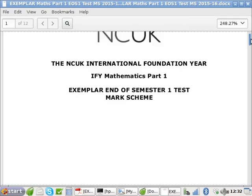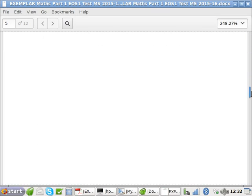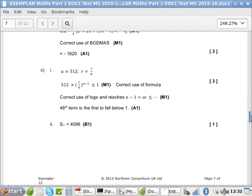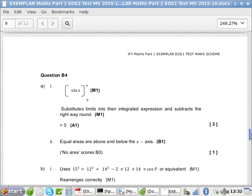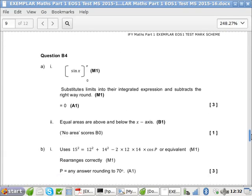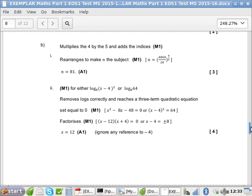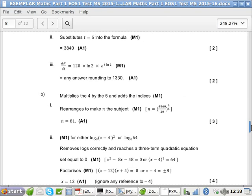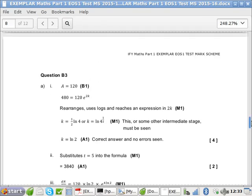Ok, which number was this? B4. Equal areas are above and below the X axis. Ok. That's fine. Is there any other answers I need to check? No, these all look the same.